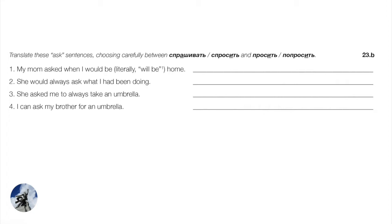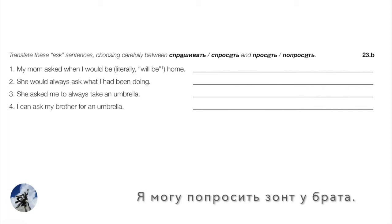Number four: I can ask my brother for an umbrella — or: I can request an umbrella from my brother. We're requesting an umbrella using the idiomatic construction with у: Я могу попросить зонт у брата.